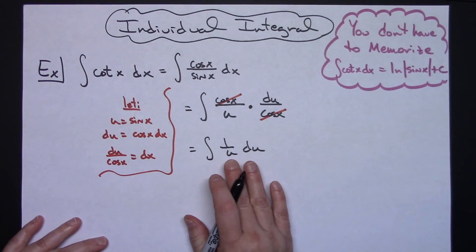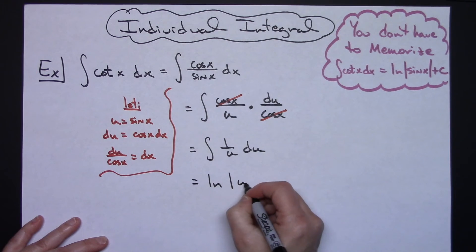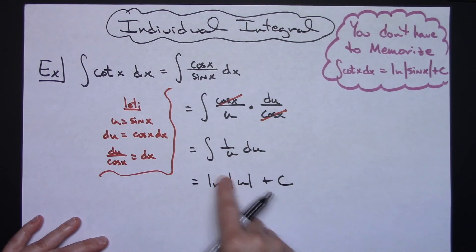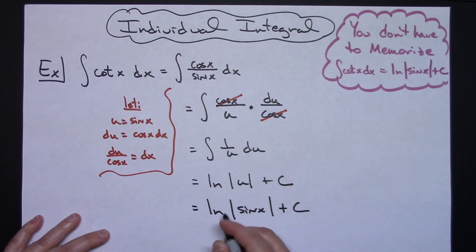That's a straightforward integral right there as being the natural log, absolute value of u plus c. And then the last step would be replacing that u with what we let it equal to. So natural log, absolute value, sine x plus c.